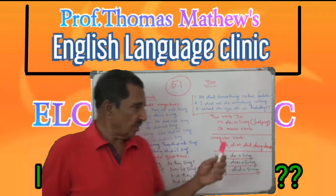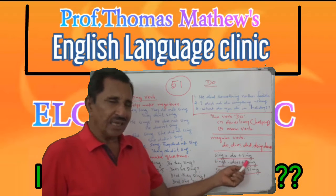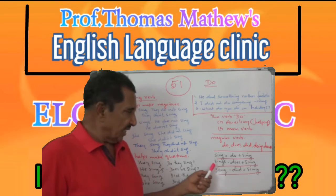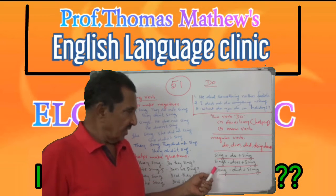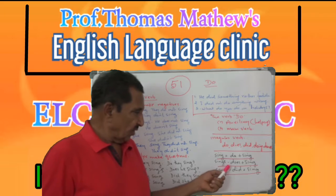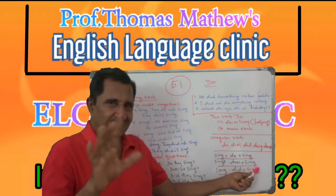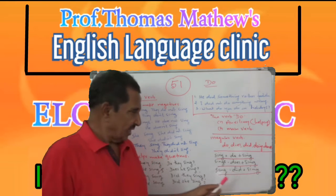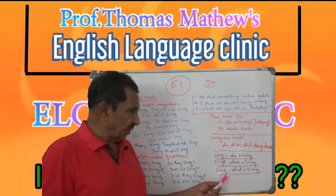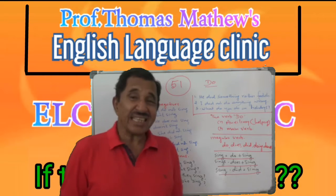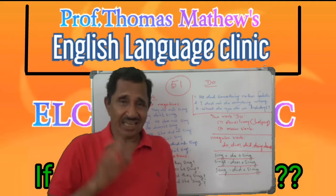That's why: 'sing' is equivalent to 'do sing'; 'sings' — third person singular — is equivalent to 'does sing,' not 'does sings.' And then 'sang,' past tense, is equal to 'did sing,' not 'did sang.'